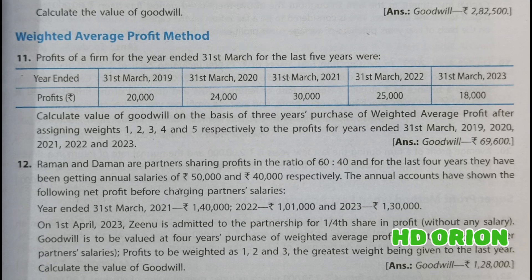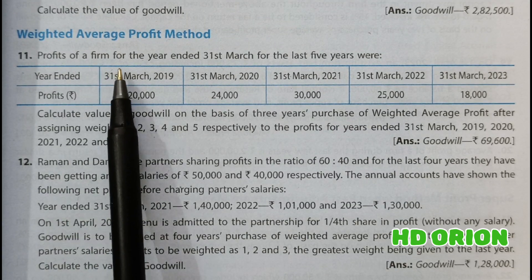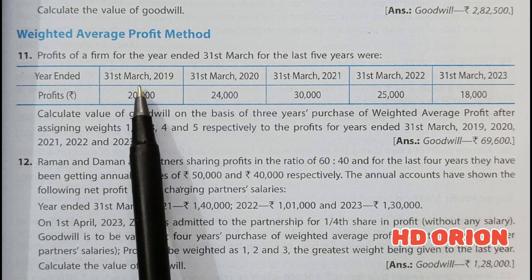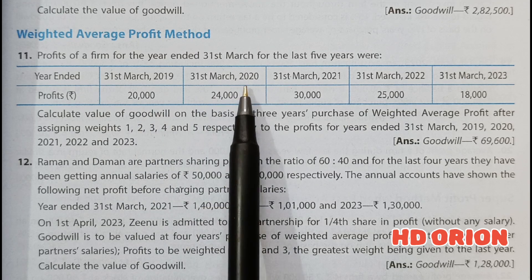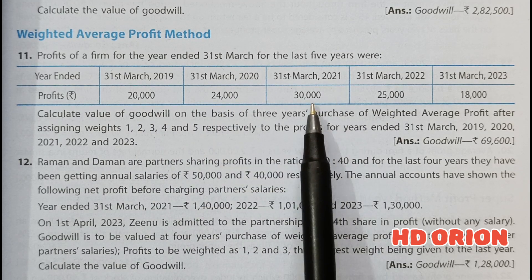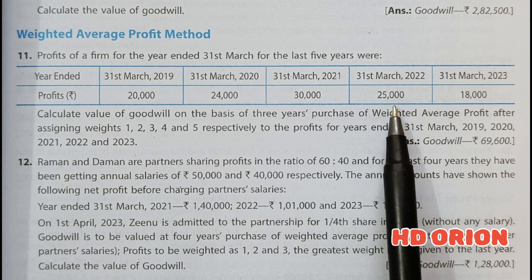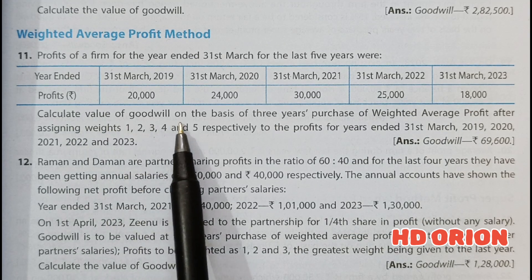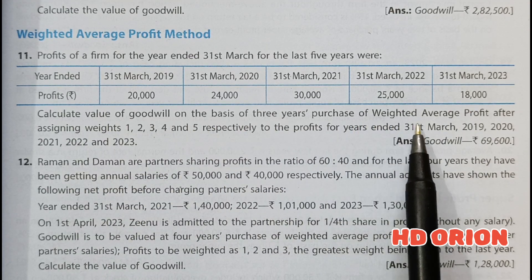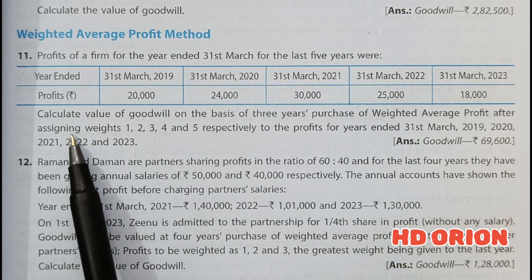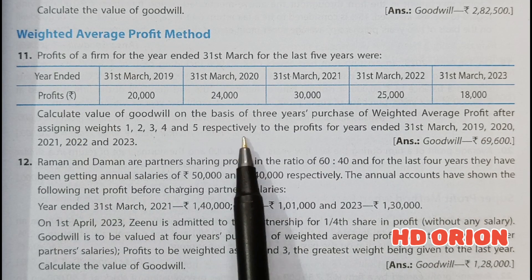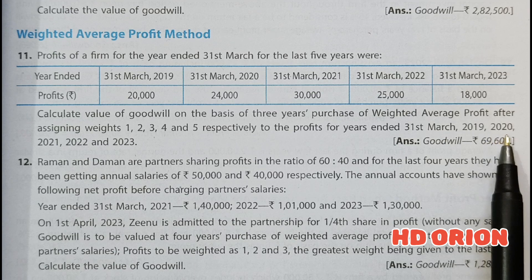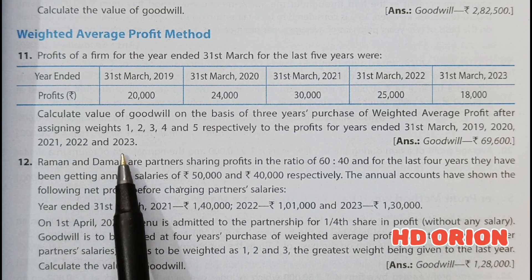Let us see question number 11. Profits of a firm for the year ended 31st March for the last 5 years were: 2019 — Rs 20,000; 2020 — Rs 24,000; 2021 — Rs 30,000; 2022 — Rs 25,000; and 2023 — Rs 18,000. Calculate the value of Goodwill on the basis of 3 years purchase of Weighted Average Profit, after assigning weights 1, 2, 3, 4, and 5 respectively to the profits for years ended 31st March 2019, 2020, 2021, 2022, and 2023.